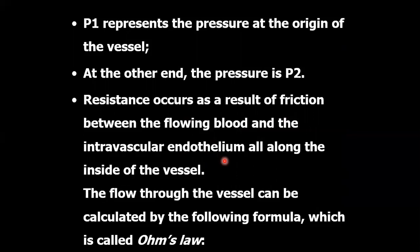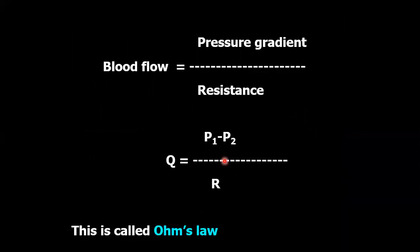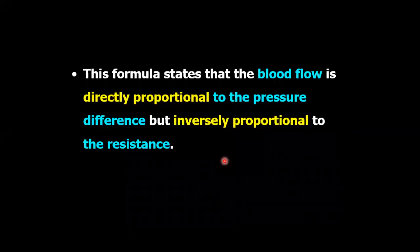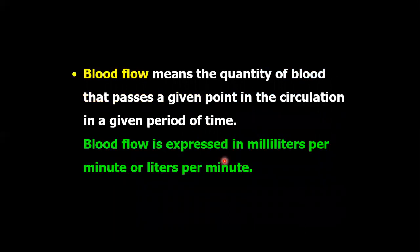The flow through the vessel can be calculated by the following formula, which is known as Ohm's law: Blood flow equals pressure gradient divided by resistance, that is Q = (P1 − P2) / R. This formula states that blood flow is directly proportional to the pressure difference but inversely proportional to the resistance — if the pressure difference is increased, blood flow is increased; if resistance is increased, blood flow is decreased. Blood flow means the quantity of blood that passes a given point in the circulation in a given period of time, expressed in milliliters per minute or liters per minute.